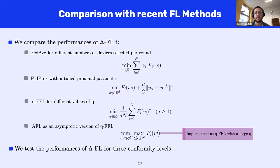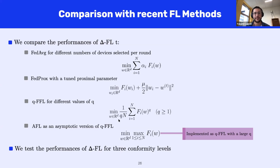There are other recent methods aimed at handling device heterogeneity. The first class stabilizes or improves convergence properties of FedAverage by correcting local drift — we can think of SCAFFOLD or FedProx, both presented in this seminar. The second class, like our framework, modifies the averaging functional, including QFFL and AFL. We compare in our experimental section with FedProx, QFFL, and AFL, where the parameter Q in QFFL's objective was tuned via grid search.